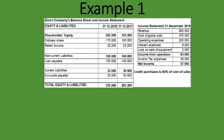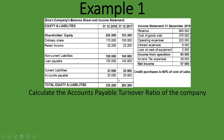Here's the example. We are given the balance sheet or statement of financial position of a company — specifically the equity and liabilities portion, since we don't need the assets portion. We are also given the income statement. We are asked to calculate the accounts payable turnover ratio of the company. The formula is net credit purchases divided by average accounts payable.